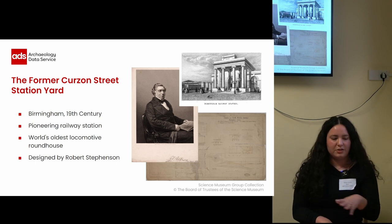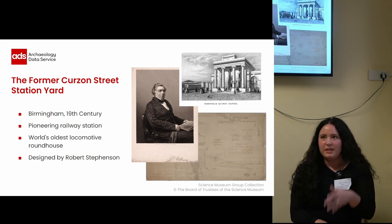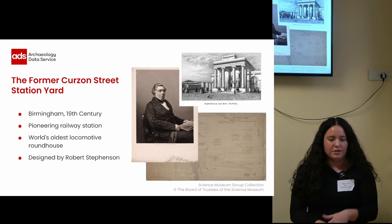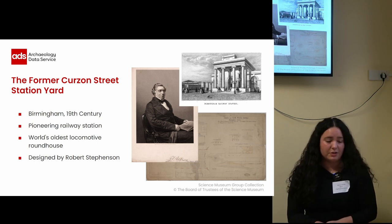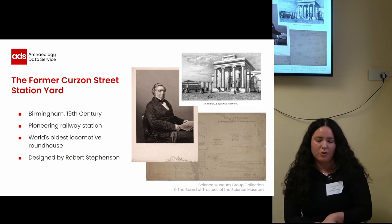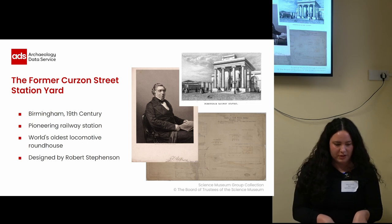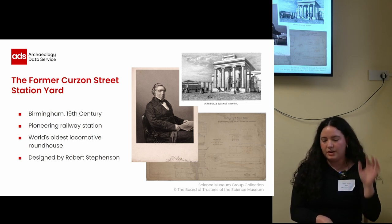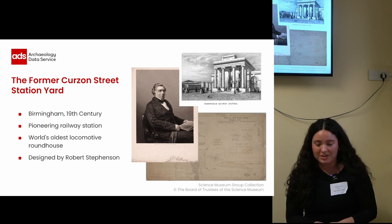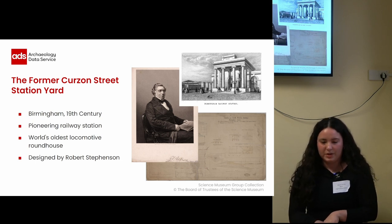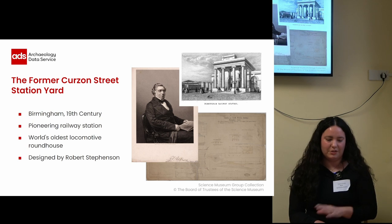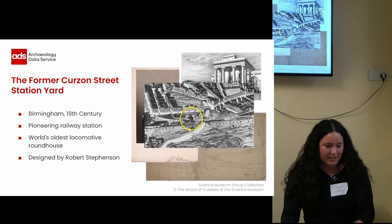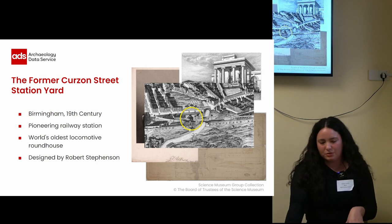And in 2020, during the excavations at the site of what will be the new Birmingham station, archaeologists found what is believed to be the world's oldest locomotive Roundhouse. And this was designed by renowned railway engineer Robert Stephenson, who is the son of George Stephenson, also known as the father of railways. And here you can see where the Roundhouse was.